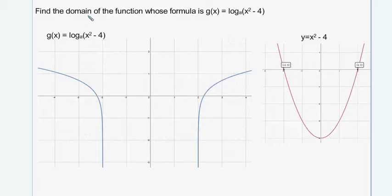Here is a problem where we are to find the domain of a function whose formula is given to be g of x equals log of some unknown base of the quantity x squared minus 4. I assume the base a is bigger than 1.